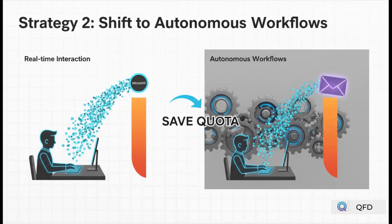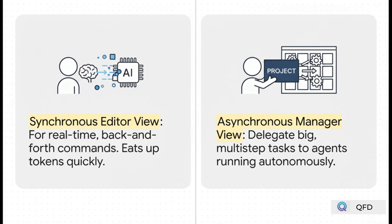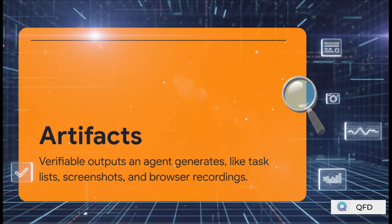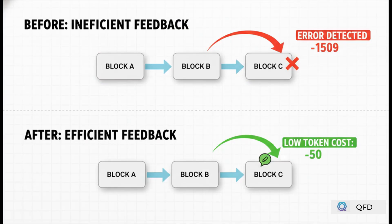Strategy number two is about prioritizing autonomous tasks. To conserve your quota, you'll want to shift from live coding to delegating bigger jobs. You become an architect just orchestrating work in the background. This is where artifacts come in — verifiable outputs generated by an agent. This creates a feedback loop so you can guide the agent without a full token-wasting restart.